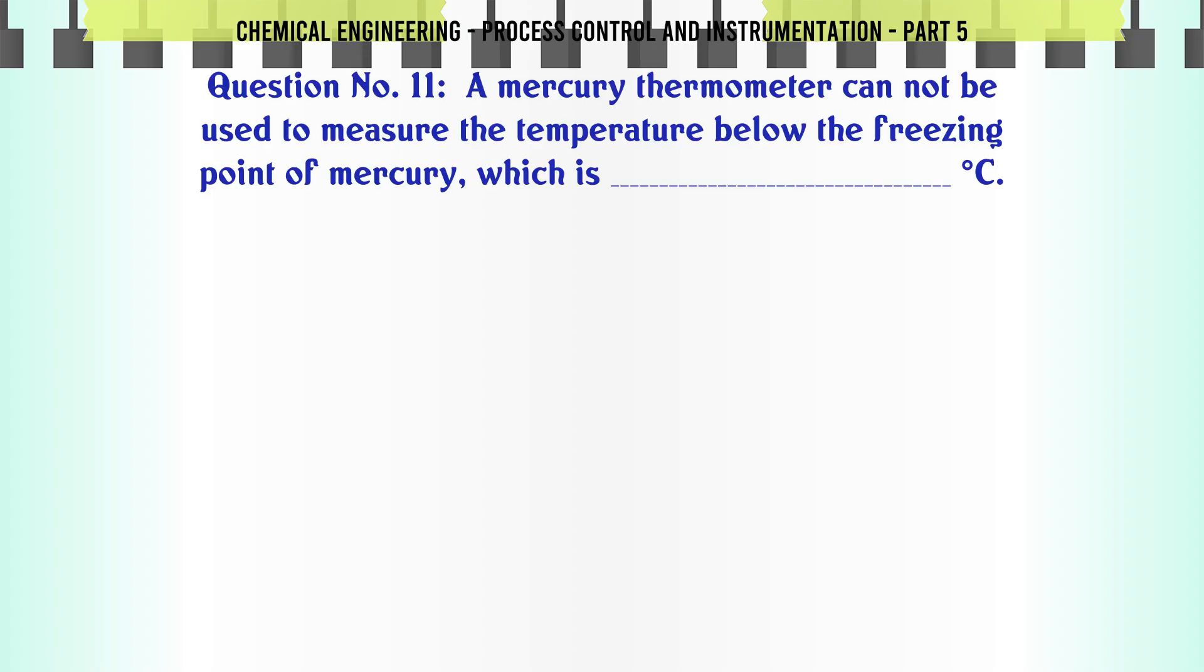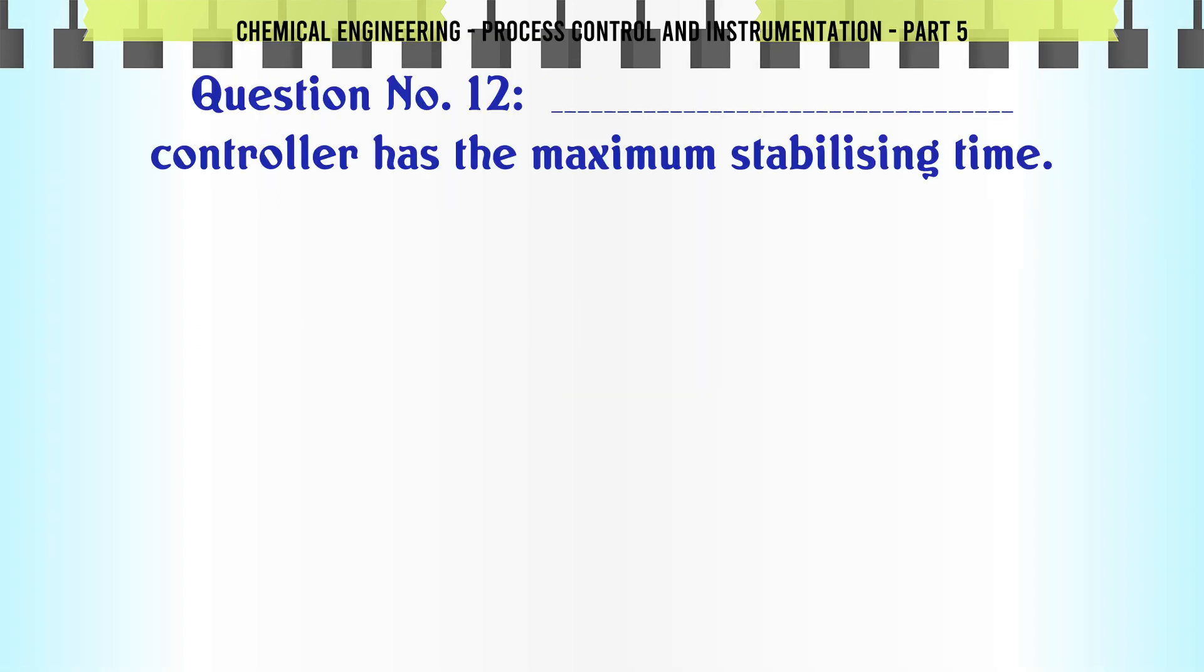A mercury thermometer cannot be used to measure the temperature below the freezing point of mercury, which is °C: A. -38.9. B. -11.9. C. -60.9. D. -80.9. The correct answer is -38.9.